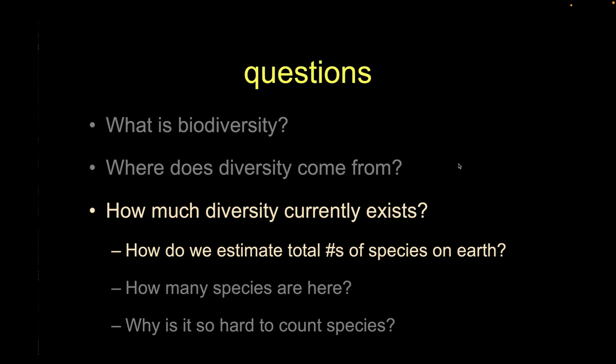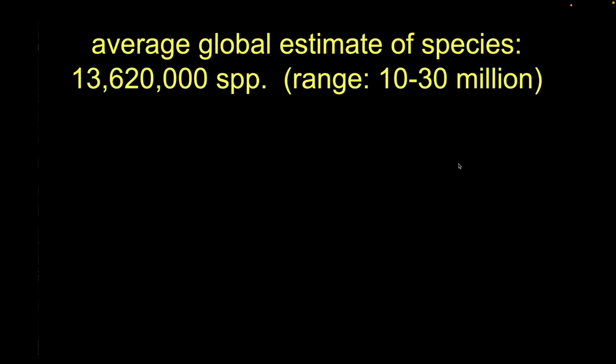Let's talk about how we estimate the number of species on Earth. Averaging a bunch of different studies, estimates range from as low as 5 million but more typically in the last decade people talk about around 10 million species — 10 to 30 million, something like that. We'll call it roughly 10 million as a starting number. And don't be fooled by the appearance of precision in any specific figure.